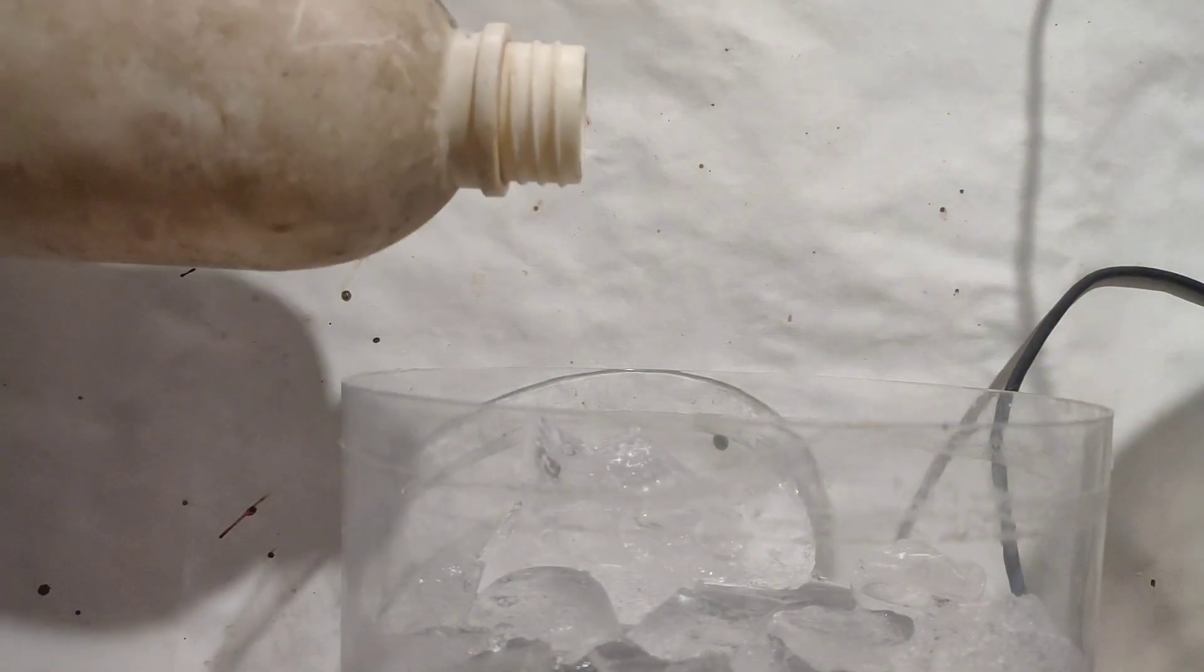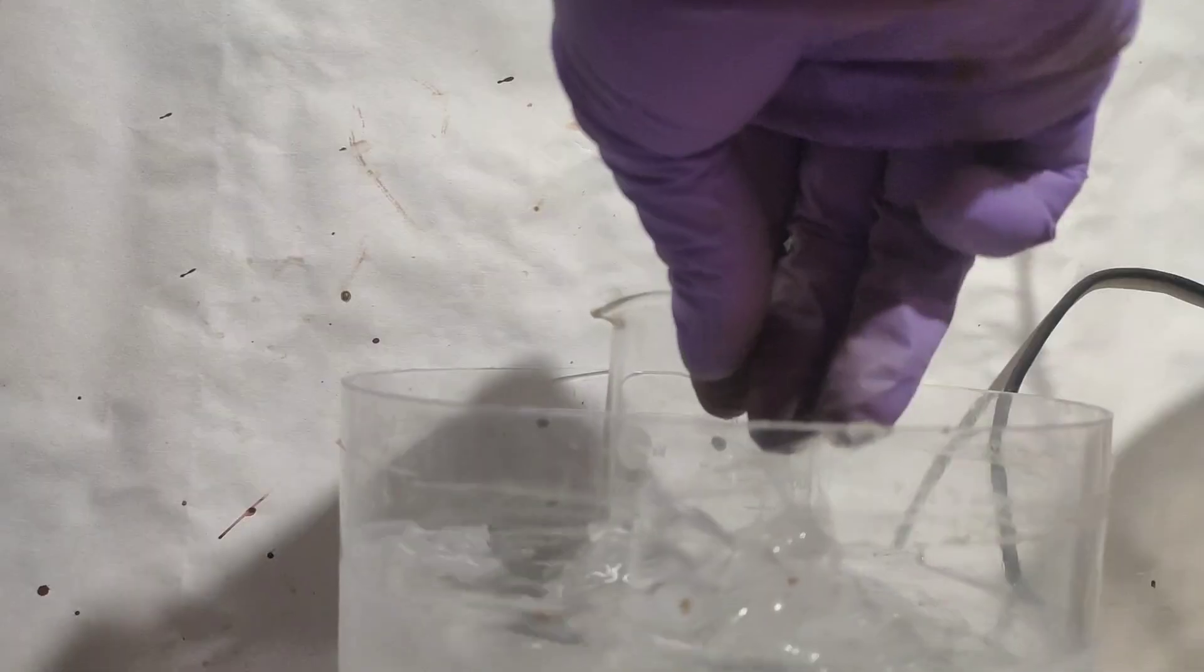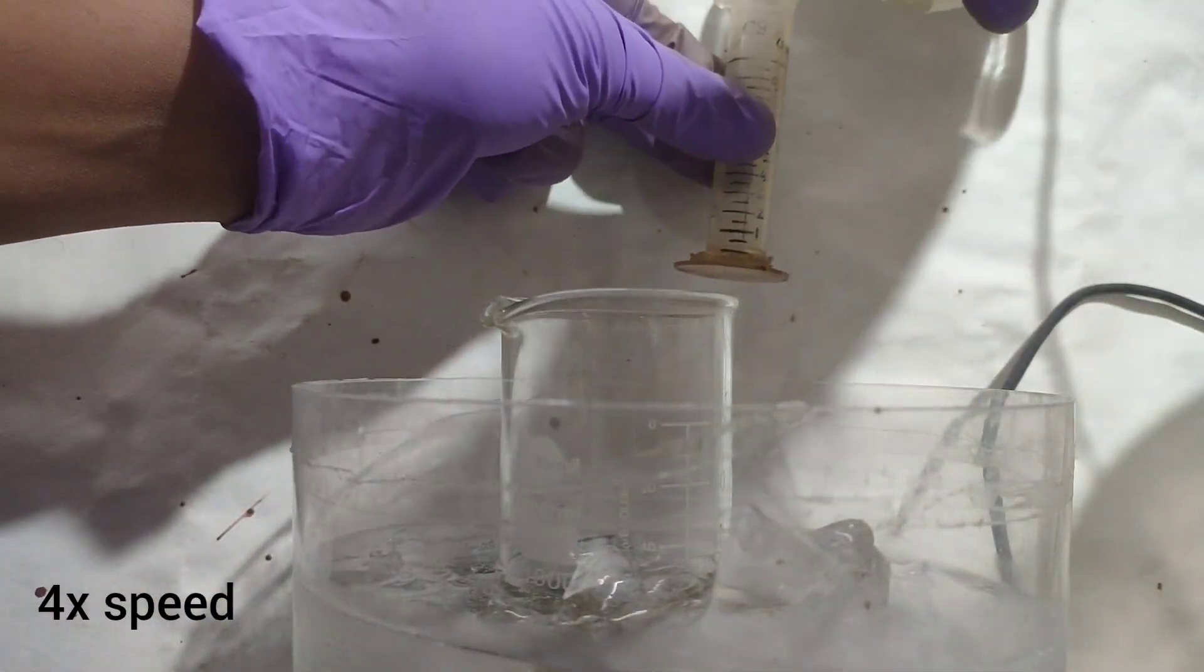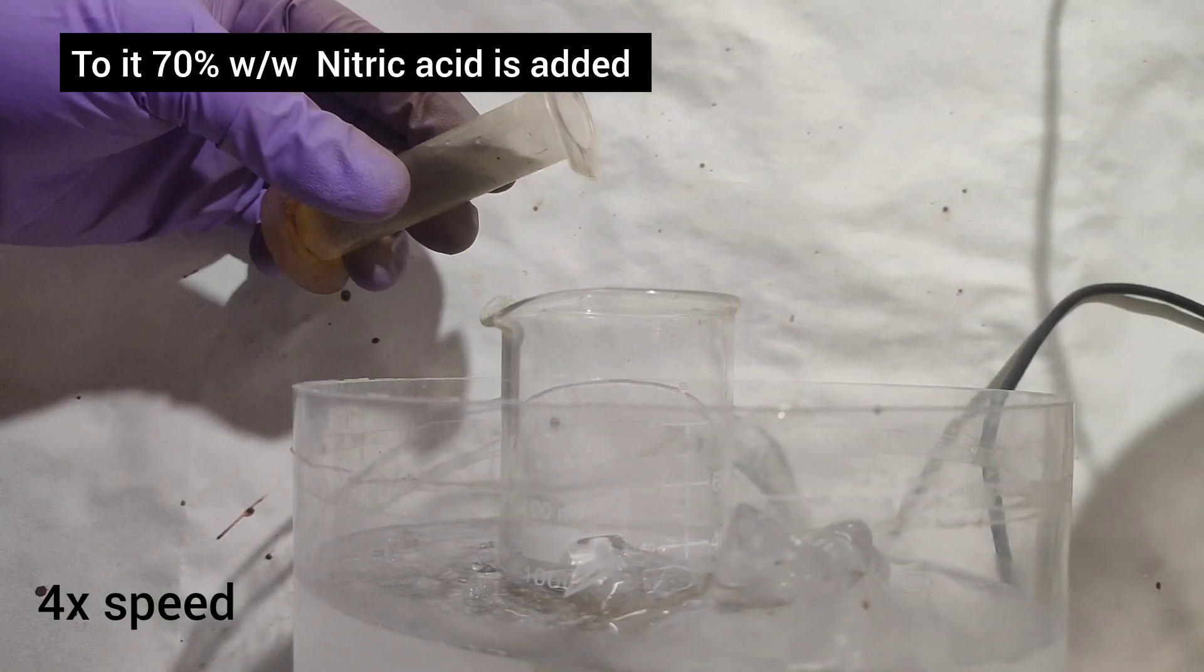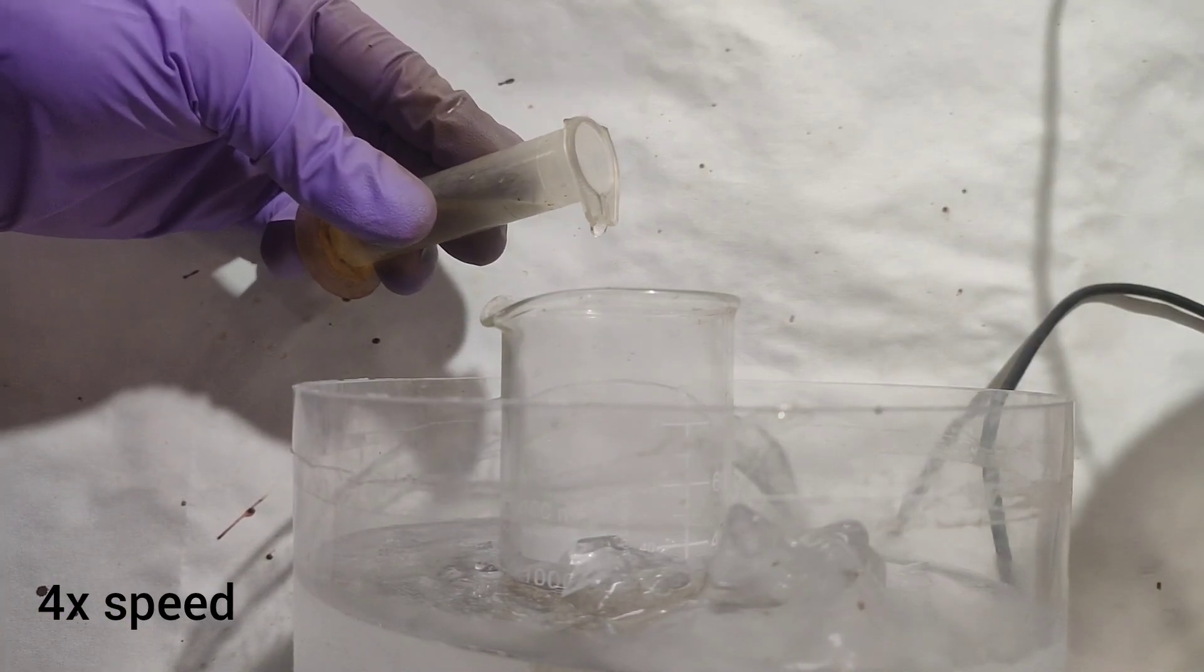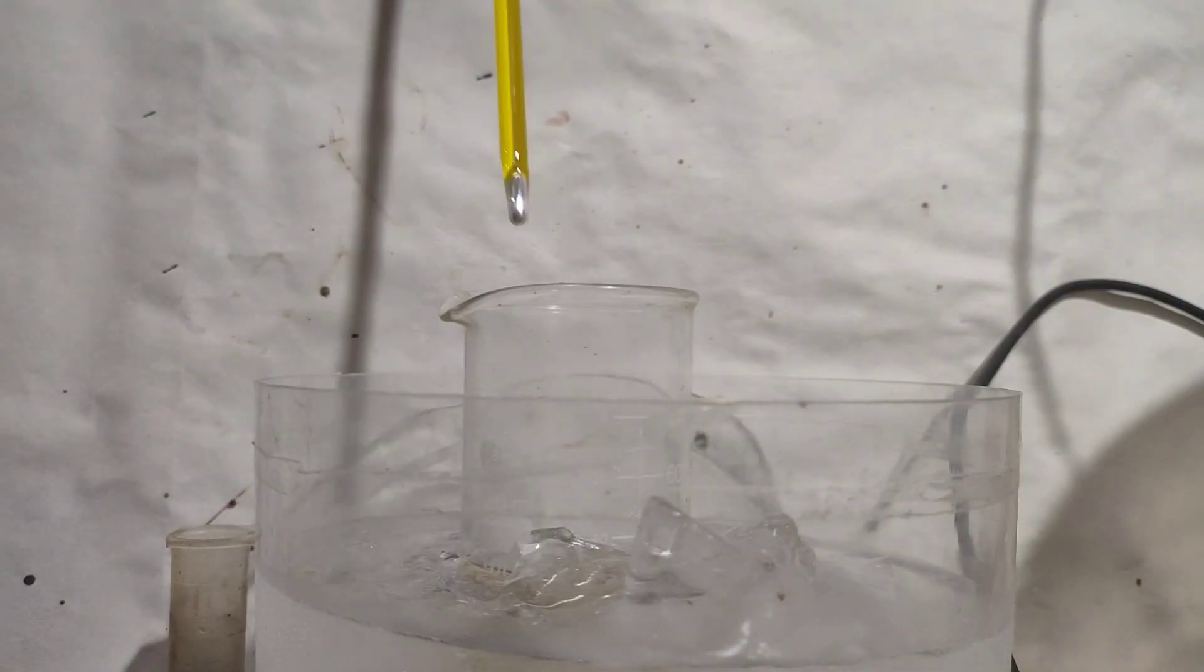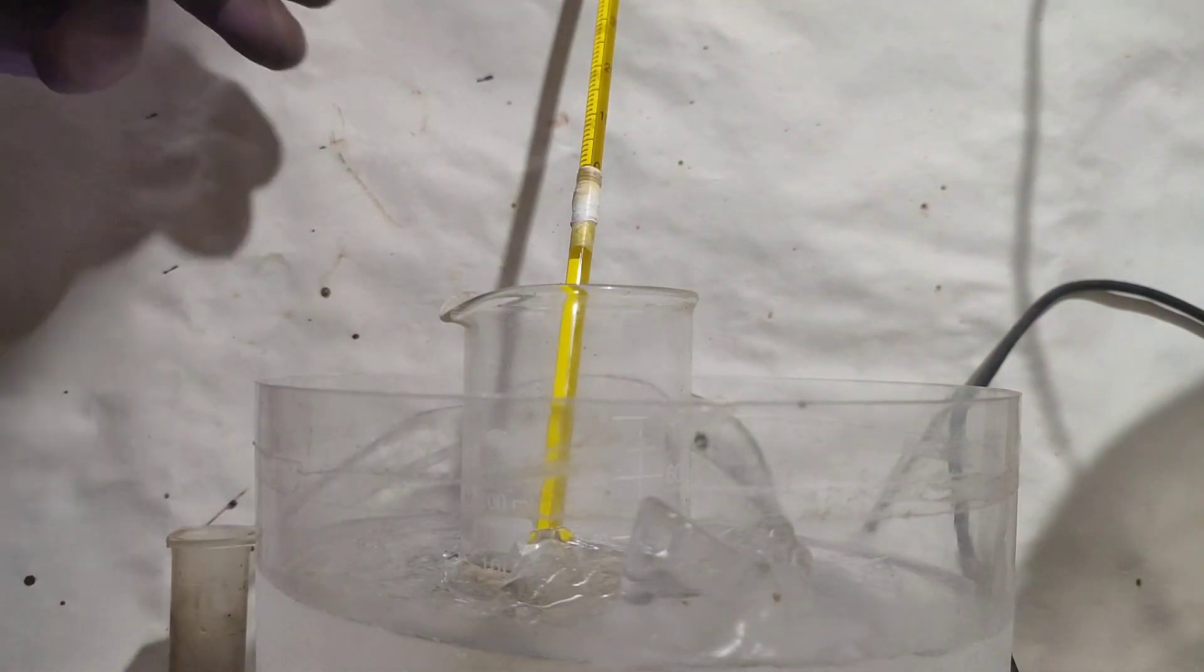First I prepared an ice bath with a beaker containing a stir bar. In the beaker, I added 10 ml sulfuric acid which is 94% weight by weight concentrated. Then to it, I added with stirring 10 ml 70% nitric acid. Then I placed the thermometer and waited until temperature fell to 5 degrees Celsius.